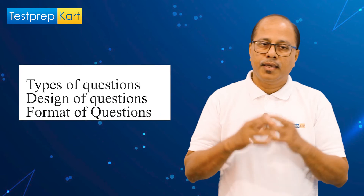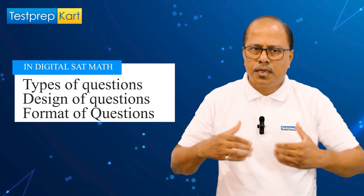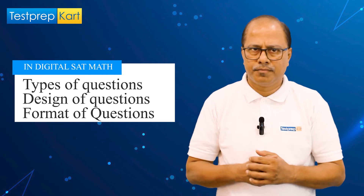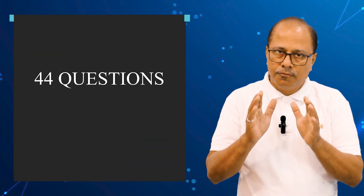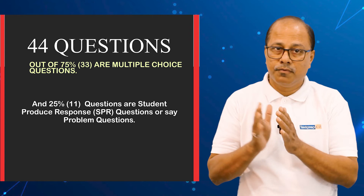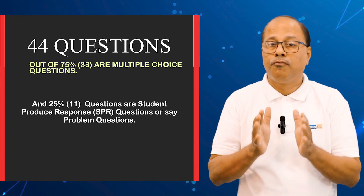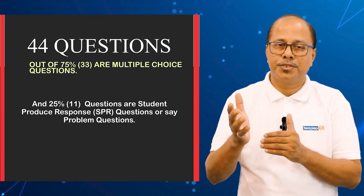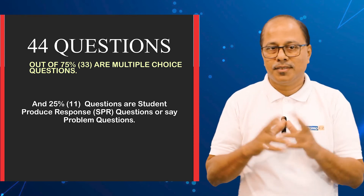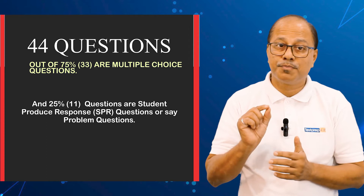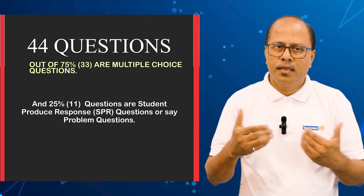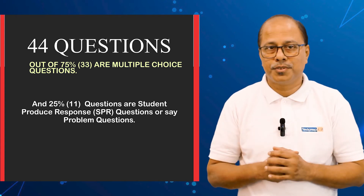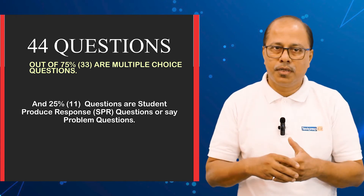In digital SAT math, the types, design, format, and specification of questions are as follows: there are 44 questions total. 75 percent — that is 33 out of 44 — would be discrete four-choice multiple choice questions. The remaining 25 percent — 11 out of 44 — would be SPR, the student produced response, also called grid-in or problem questions, where you need to develop the logic and find the right answer.